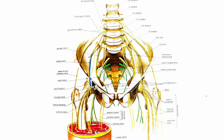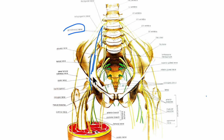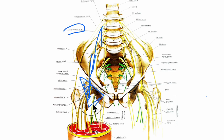The femoral branch of the genitofemoral nerve occupies the lateral compartment of the femoral sheath along with the femoral artery. Its main function is to supply most of the skin over the femoral triangle.